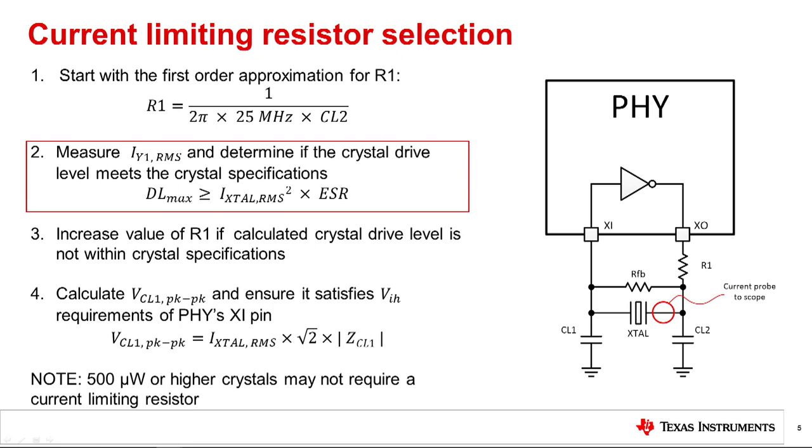Next, once the crystal circuit is active and oscillating, the drive level should be measured to ensure the crystal's datasheet parameters are not exceeded. Otherwise, the crystal may prematurely age or become damaged by overdriving. The best method to observe the crystal drive level is to measure the current flowing through the crystal. To calculate the crystal drive level, the square of the RMS value of the current through the crystal is multiplied by the ESR of the crystal.